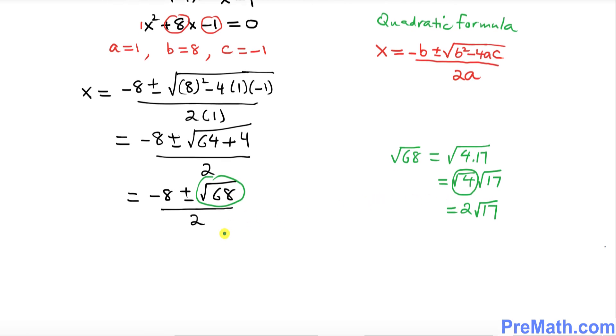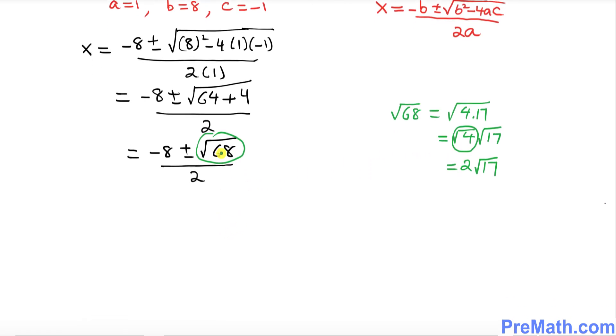That's what I'm going to replace √68 with. So I can write -8 ± 2√17 over 2, and here 2 could be written as dividing 2 individually.